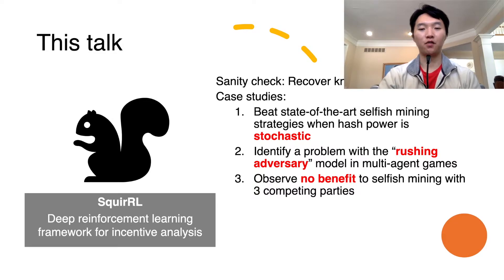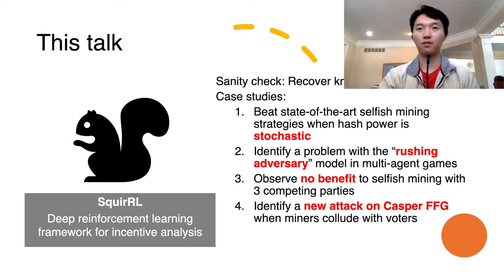We observe no benefit to selfish mining with three competing parties. And four, we identify a new attack on Casper FFG when miners collude with voters.